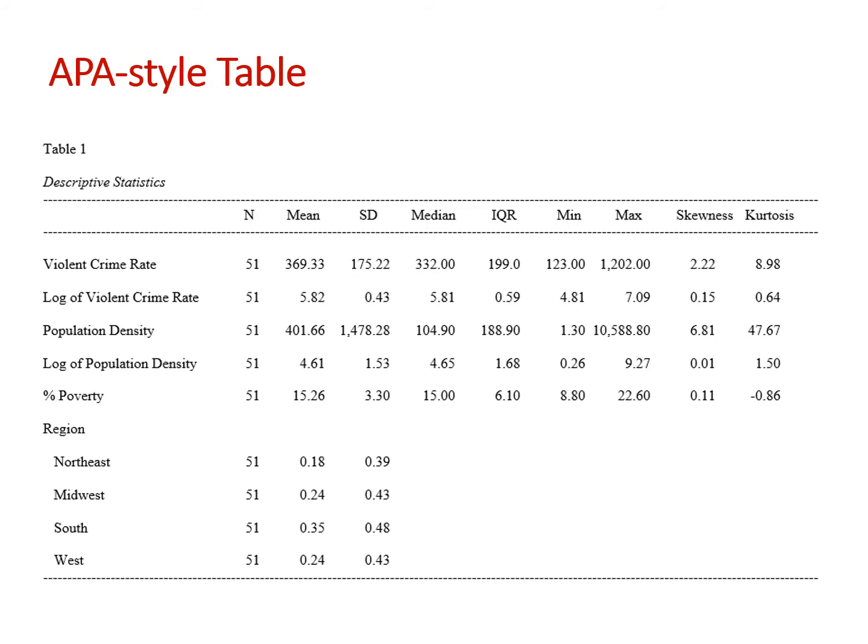Here it is. I took some descriptive statistics for numeric variables — this is state-level data — and put it into an APA-style table. You'll notice how the columns are aligned: they are right-justified or justified at the decimal point. Each column within the same type of data is worked out to the same significant digits. The table is a three-line table with the appropriate title style.